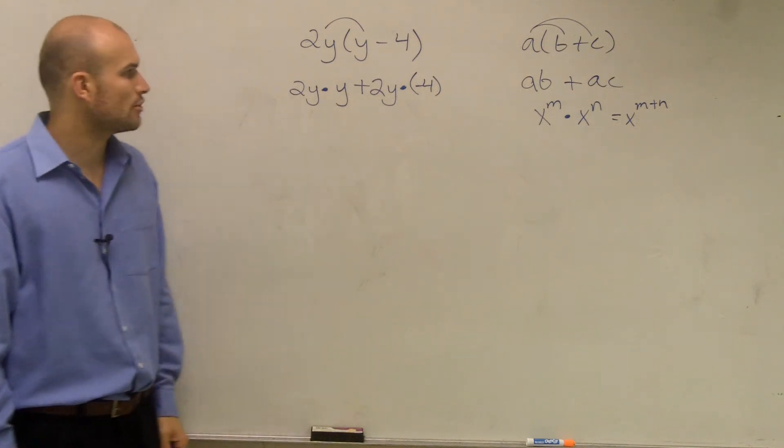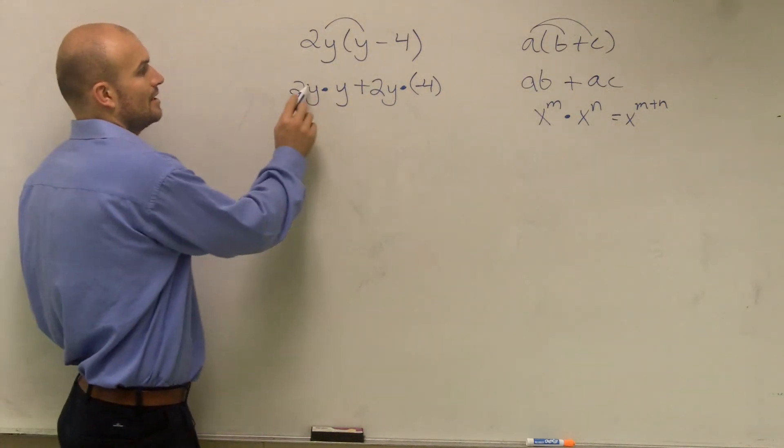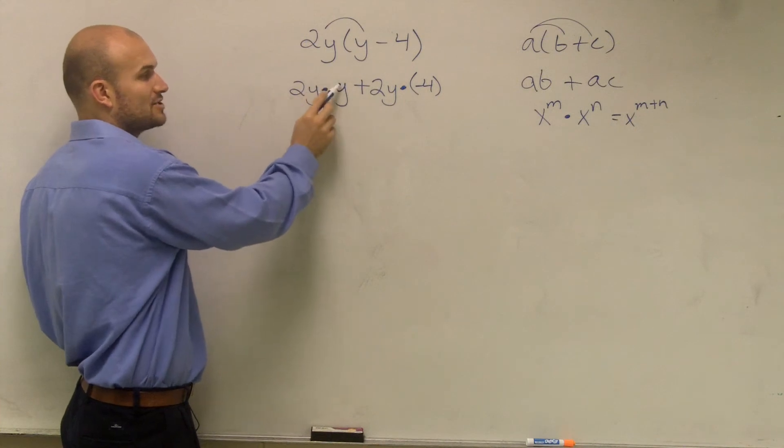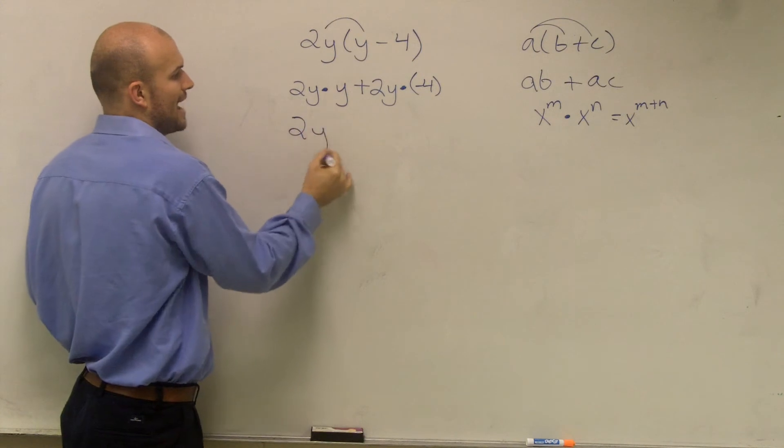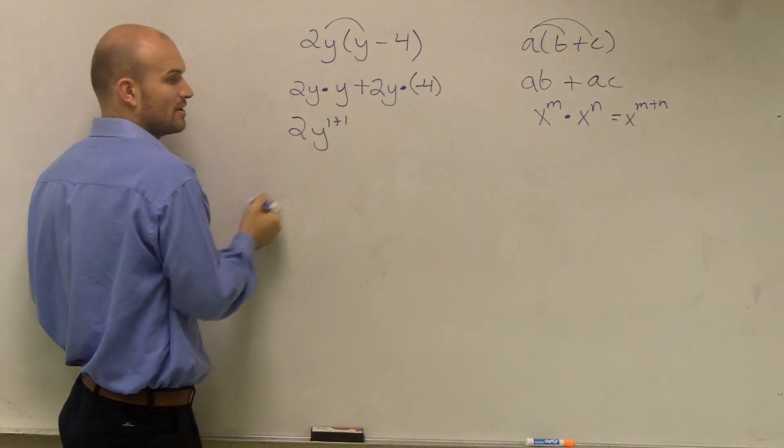Then, simply, all we need to do is use our order of operation or use our rules. Now I have two monomials multiplied by each other. These have exponents. Since these have the same bases and exponents, I'm going to add their exponents. Those both have an exponent of 1.